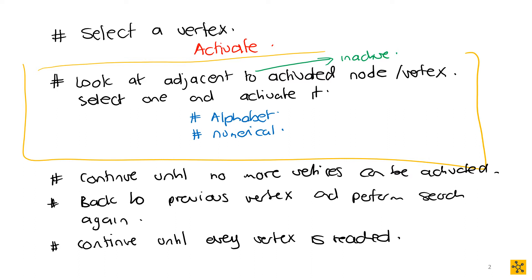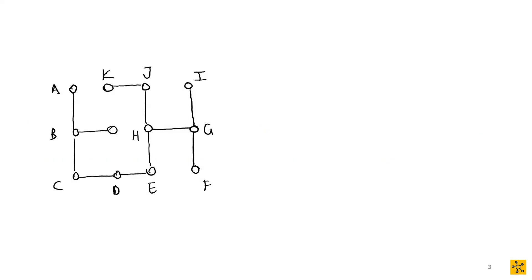Let's jump straight to examples. Here we have an example and this graph is actually already a spanning tree — it doesn't have any cycles, so it really is a tree. This is just to show you the process of the algorithm. We'll then do another example with a cycle involved so we can see clearly that performing this algorithm gives us a spanning tree.